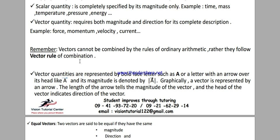One thing you have to remember is that vectors cannot be combined by the rule of ordinary arithmetic; rather, they follow the vector rule of combination. For example, if you have two kilograms of mass on one side and three kilograms on the other and combine them, you get five kilograms total. Mass is a scalar, so ordinary arithmetic addition applies.